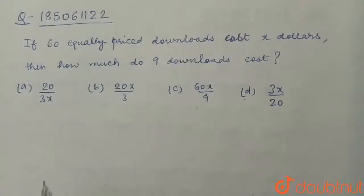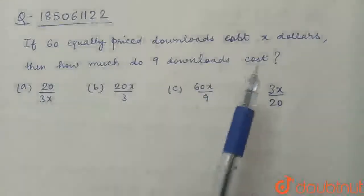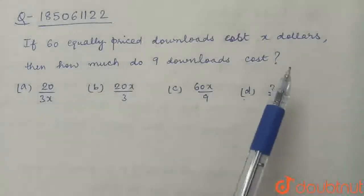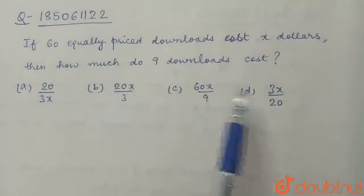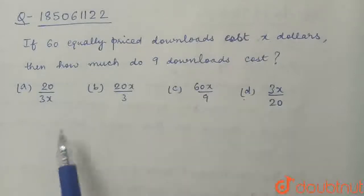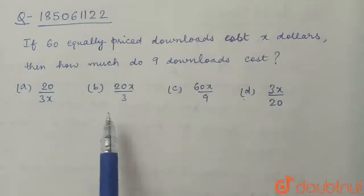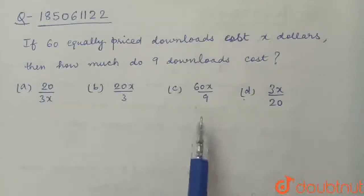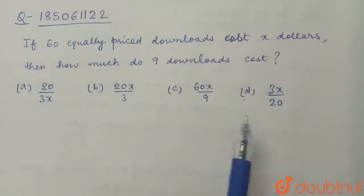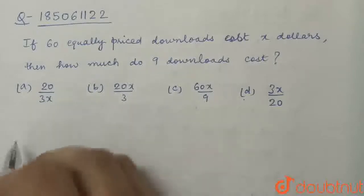Our question is: if 60 equally priced downloads cost X dollars, then how much do 9 downloads cost? The options are: A) 20 upon 3X, B) 20X upon 3, C) 60X upon 9, and D) 3X upon 20.